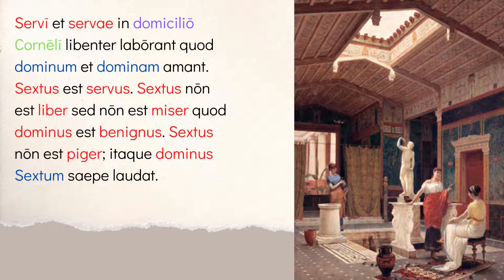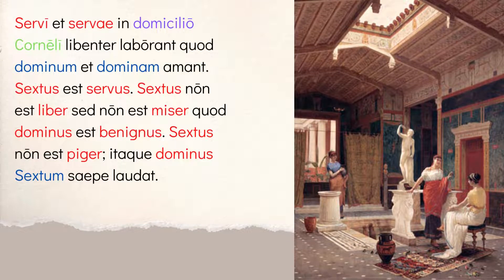Next: servi et servae in domicilio Corneli libente laborant, quo dominum et dominam amant. The slaves and slave women work willingly in the house of Cornelius because they like the master and mistress. Again, the textbook's portrayal of willing and happy slaves is a problematic framing — it's an old textbook from the 1930s. I would encourage you to look up the dynamic of how slavery worked in ancient Rome to get a better sense of what's going on.